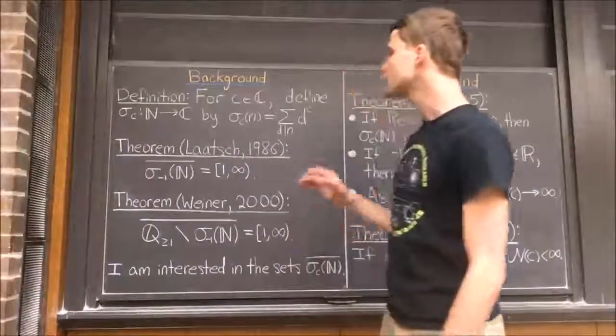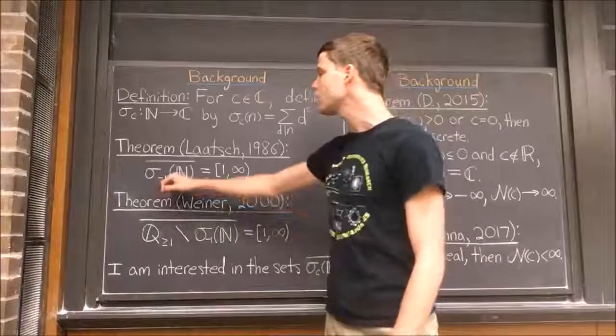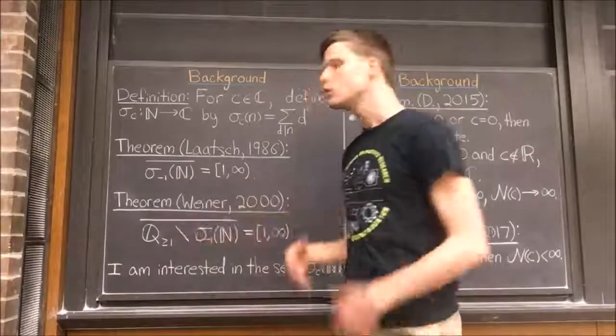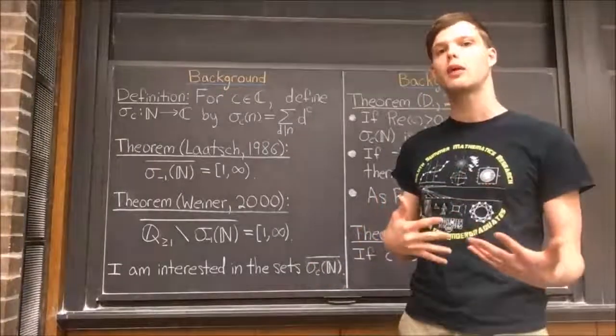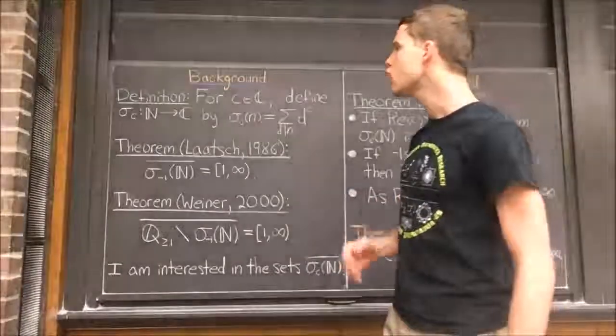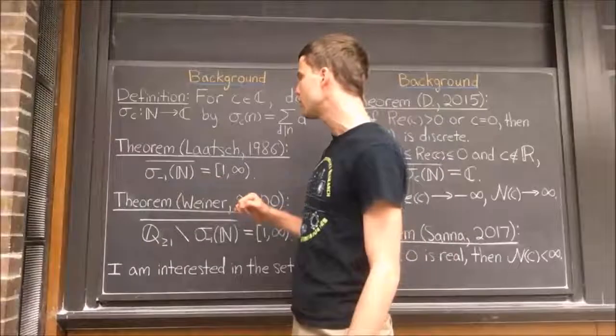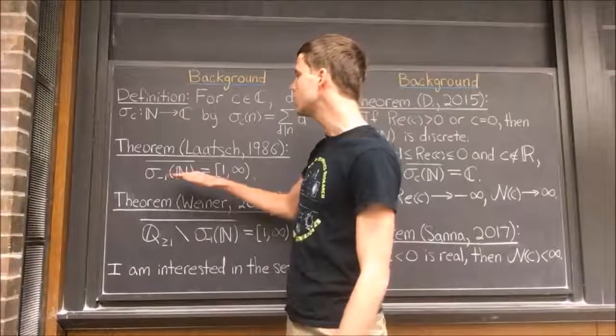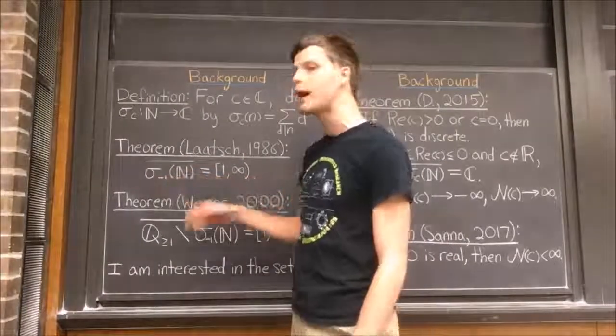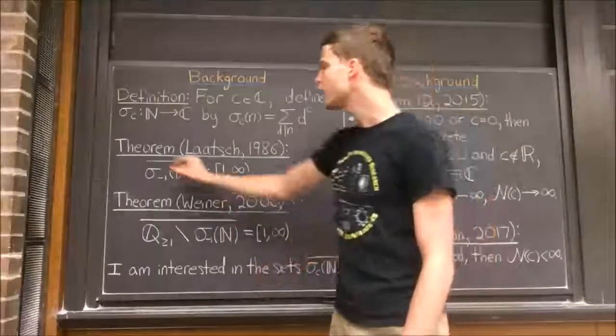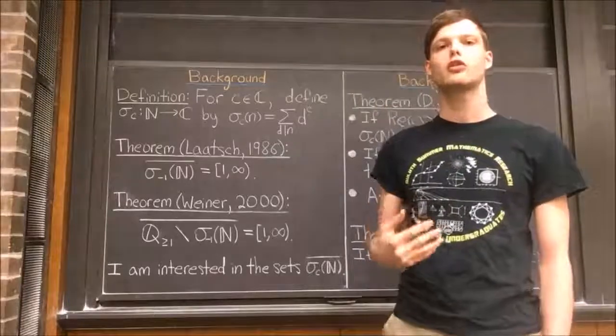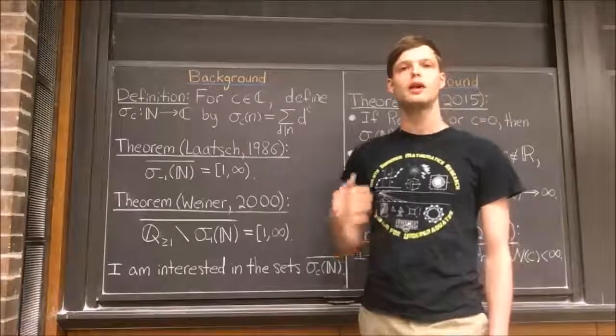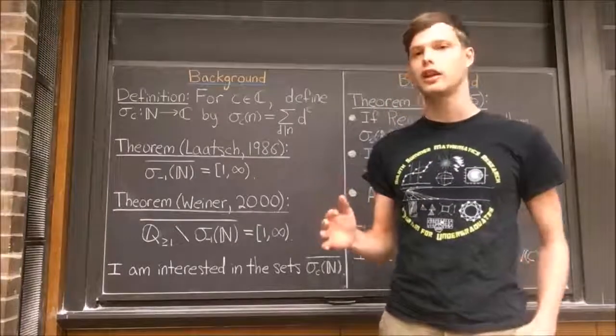In 1986, Richard Latch decided to study the function σ_{-1}. He was motivated by some very difficult questions concerning the notions of perfect numbers and friendly numbers. He showed that if you take the range of σ_{-1}, in other words, the image of the set of all positive integers under the map σ_{-1}, then the topological closure of this set is the interval from 1 to infinity. In other words, the range of σ_{-1} is dense in the interval from 1 to infinity.